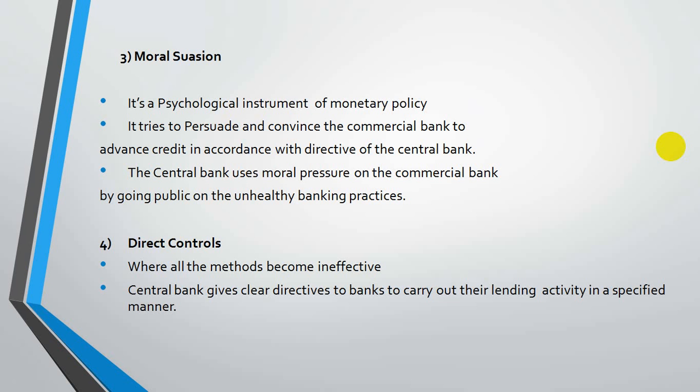The fourth qualitative tool is direct control. When all other measures turn out to be ineffective, RBI can directly engage with citizens, manufacturers, and organizations in the economy, exercising different forms of control directly. The central bank gives clear-cut instructions to banks to carry out their activities in a specific manner as desired by RBI.